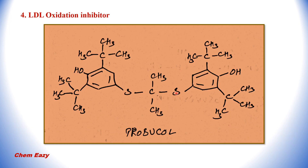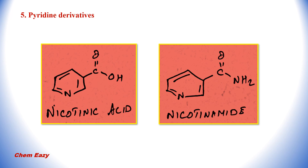This is the structure of probucol, coming under the category of LDL oxidation inhibitors. Under the category of pyridine derivatives, this is the structure of nicotinic acid and this one is nicotinamide.